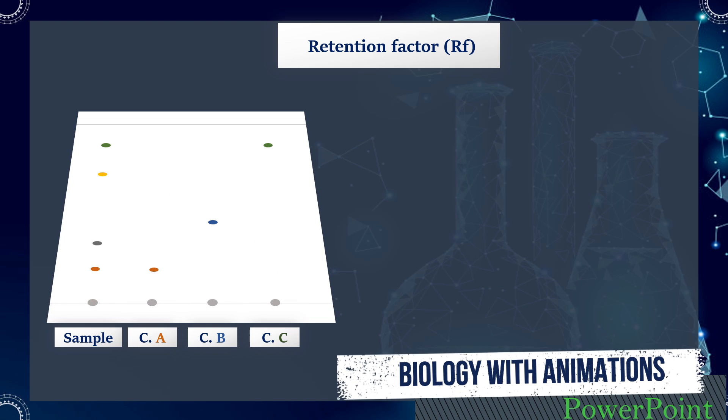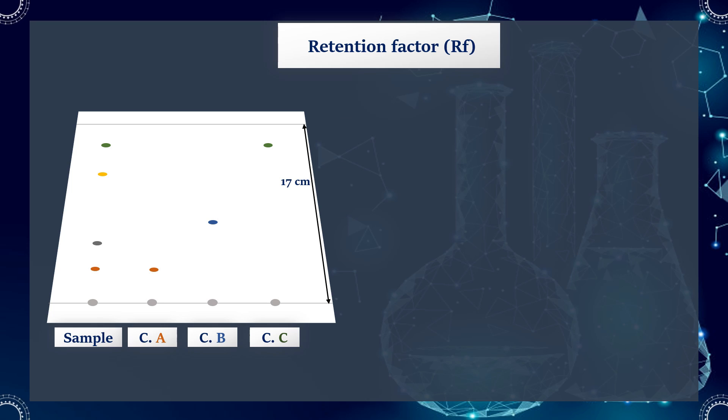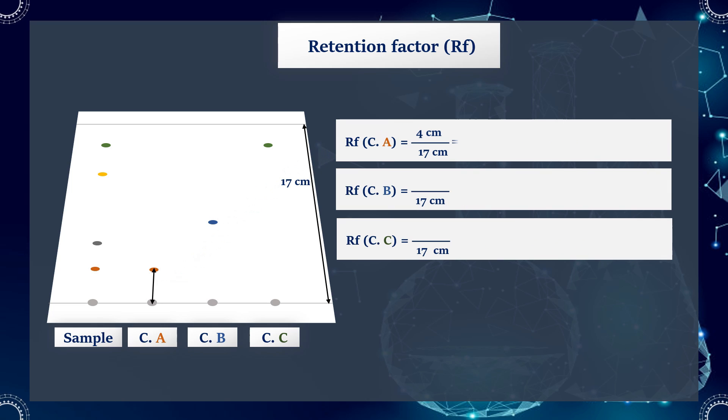A compound with a lower RF tends to have more polar functional groups than a compound with a higher RF. Based on the RF values, compound A is the most polar, and compound C is the least polar.